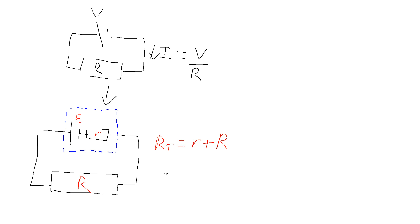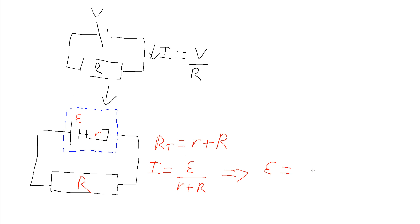If we want to determine the current flowing using Ohm's law, the current is given by voltage — in this case the EMF — divided by the total resistance, so R plus r. This leads us to the first equation used when discussing internal resistance: the EMF of the voltage source equals the current flowing in the circuit multiplied by the sum of the internal and external resistance, ε = I(R + r).